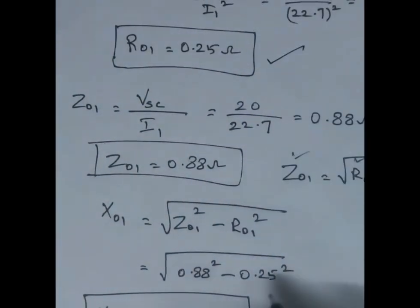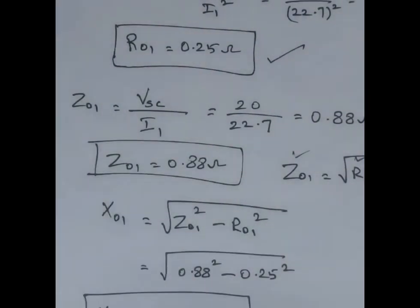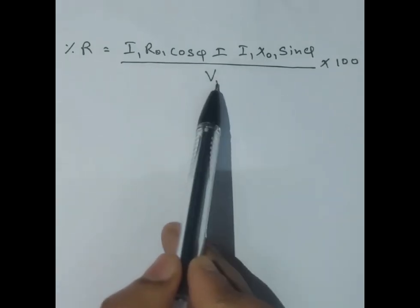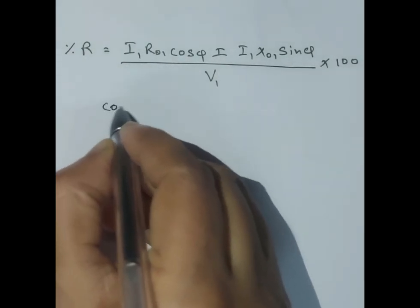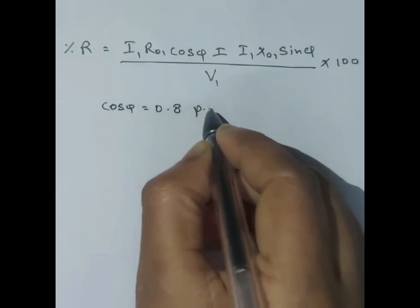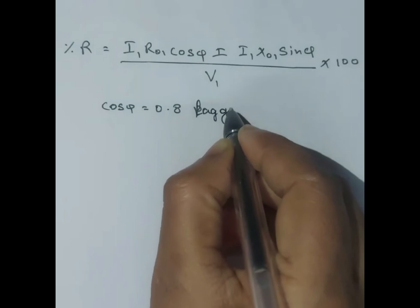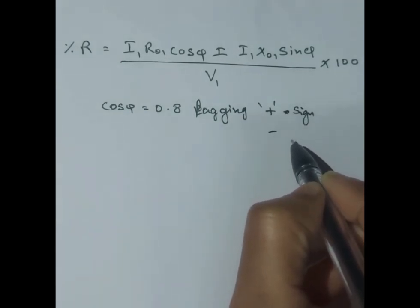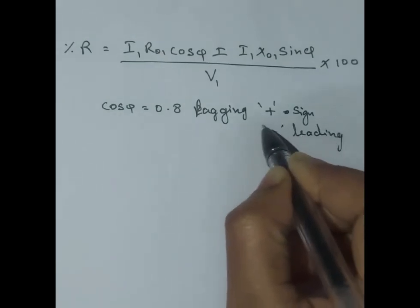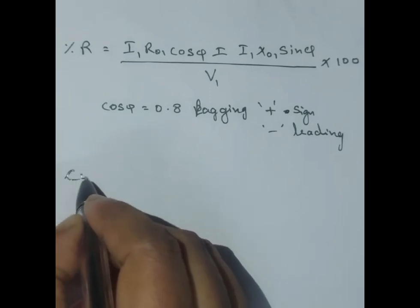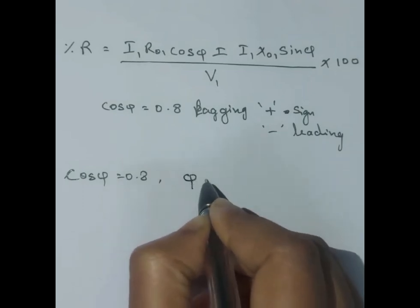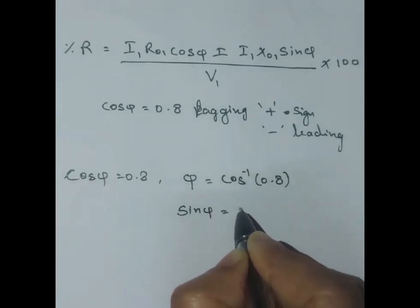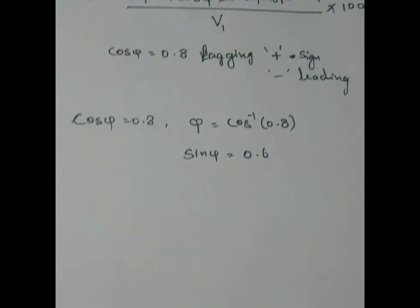We now have all the values: I₁ = 22.7 A, R₀₁ = 0.25 Ω, X₀₁ = 0.84 Ω, and V₁ = 440 V. Since power factor is 0.8 lagging, cos φ = 0.8 and sin φ = 0.6. For lagging, we use the plus sign in the regulation formula.